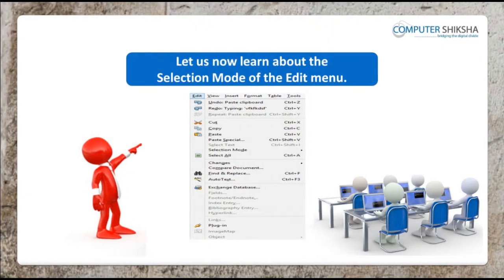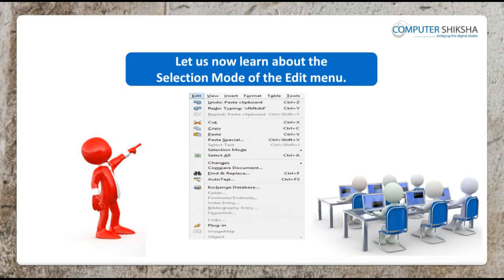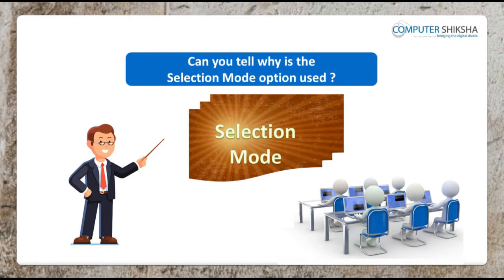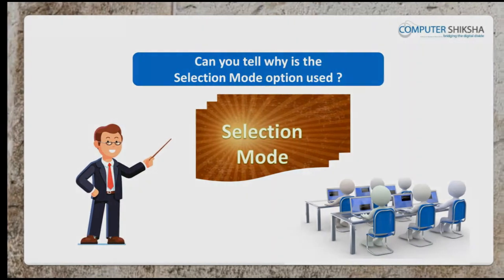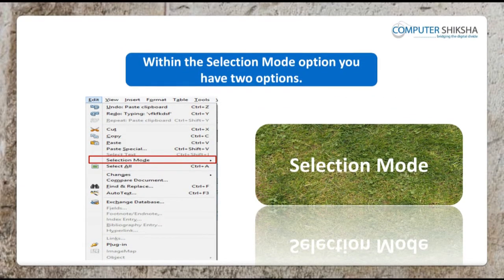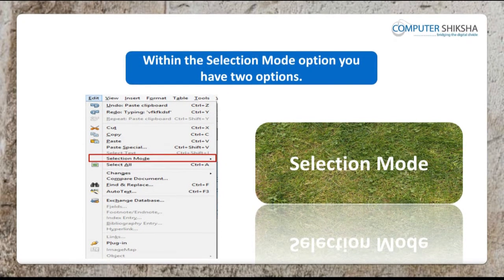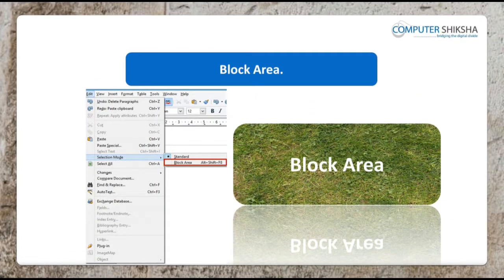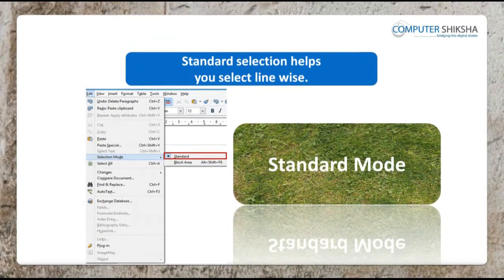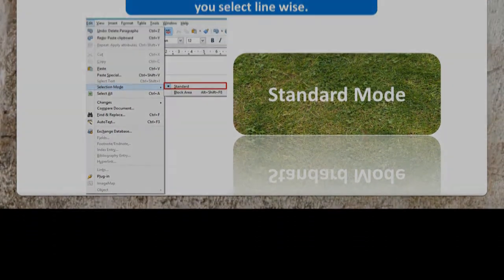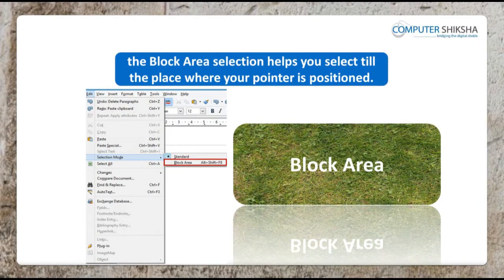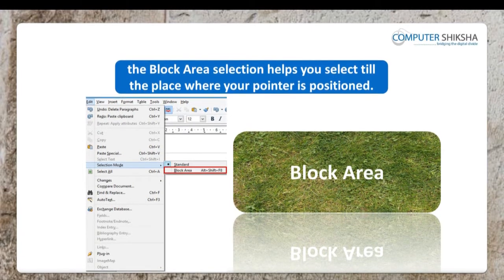Let us now learn about the selection mode of the edit menu. Within the selection mode option you have two options: one is standard selection and two is block area selection. Standard selection helps you to select line-wise, whilst the block area selection helps you to select up to the place where your pointer is positioned.